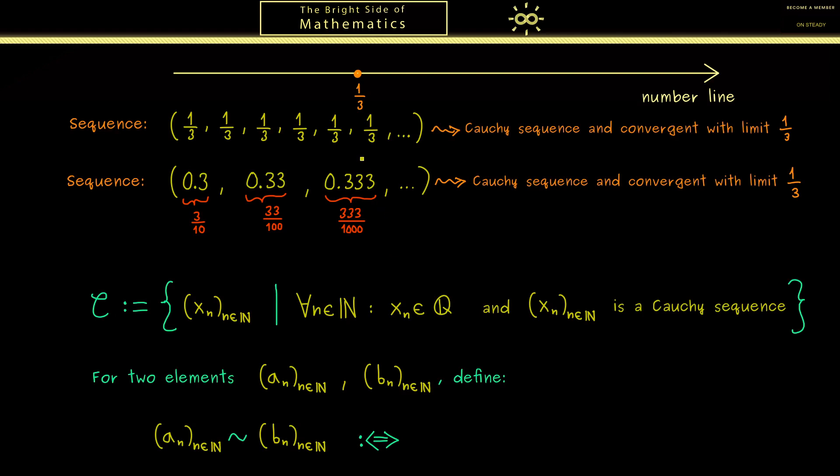For this, let's imagine that we see all the sequence members here on the number line. In the case that the two Cauchy sequences represent the same point, they accumulate around this number, so the sequence members get closer and closer to this point.